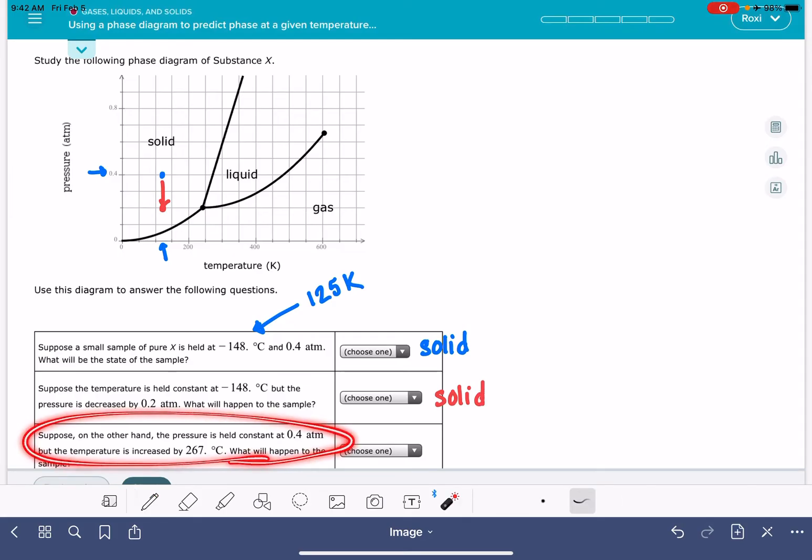Now that next question, the last question, what it wants us to do is go back to that original pressure-temperature combination and now hold the pressure constant but increase the temperature by 267 degrees Celsius. So here we're going to be holding the pressure constant, but we're going to be increasing the temperature by 267 degrees Celsius. So that's going to be a new temperature of 392 Kelvin.